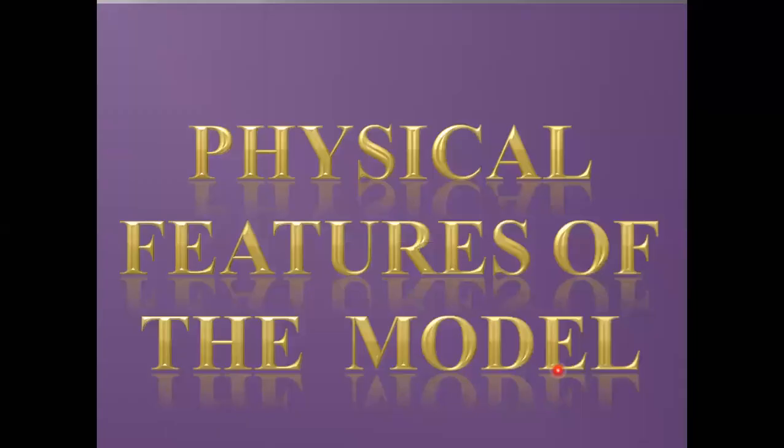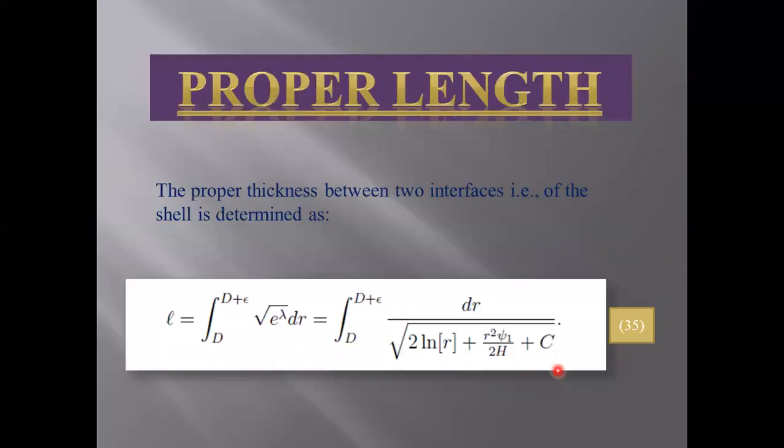Physical features of the model: proper length. The proper thickness between two interfaces, that is the shell, is determined in equation number 35.